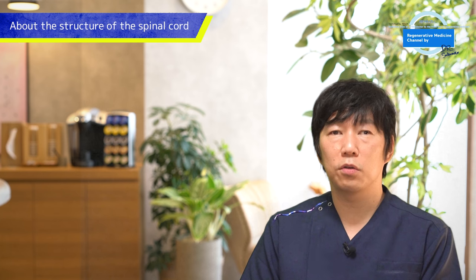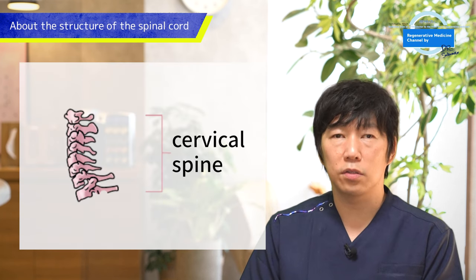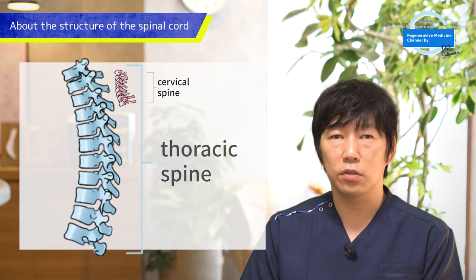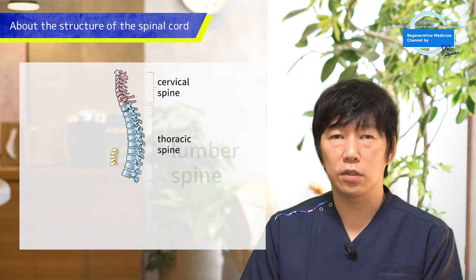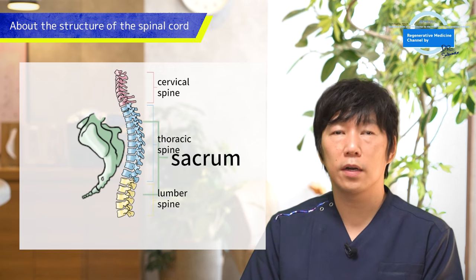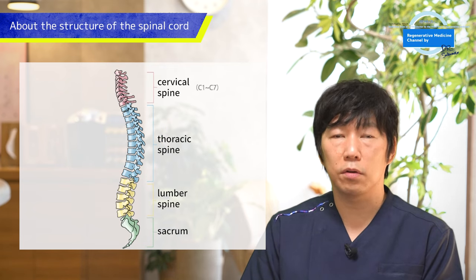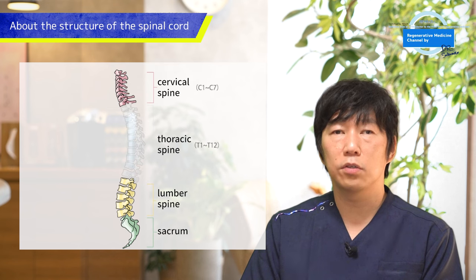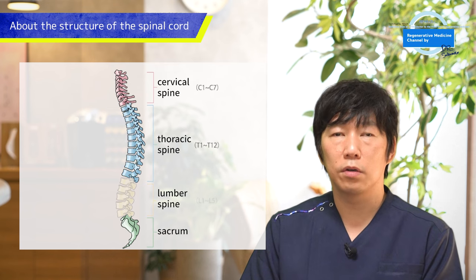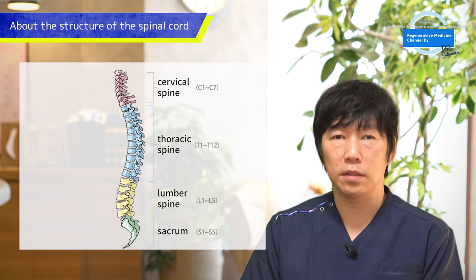The spinal cord is divided into cervical, thoracic, lumbar, and sacral regions, with 7 cervical vertebrae, 12 thoracic vertebrae, 5 lumbar vertebrae, and the sacrum.